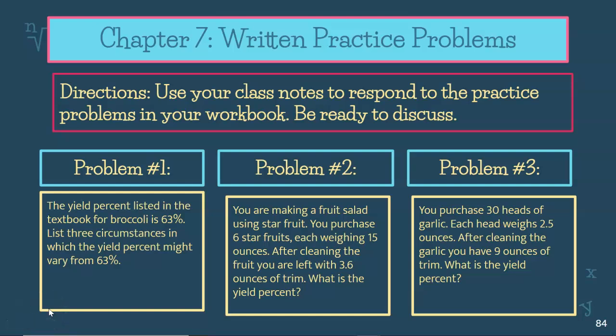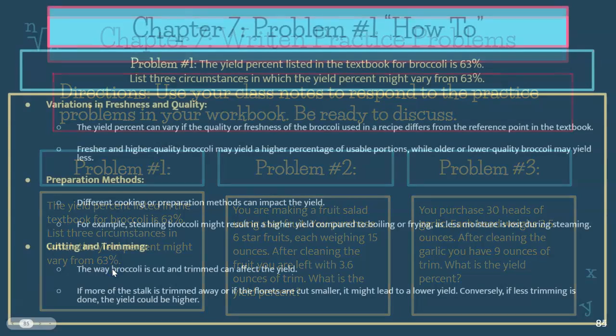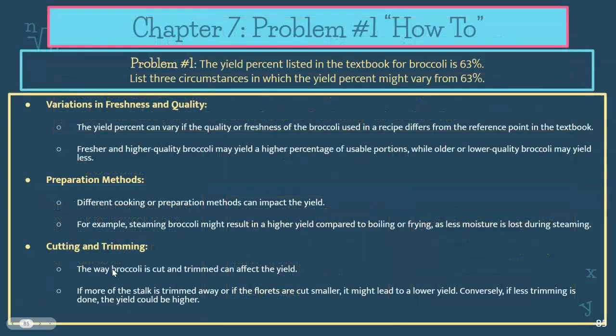Hello, this is the Chapter 7 Yield Percent Written Practice Problems to prepare you for the culinary math exam. You're going to use the screencast to check your work for these three problems that you practiced. You will be referencing the yield percent triangle for the formulas and the steps, along with the information learned in the slides. Make sure you have your culinary math book open.